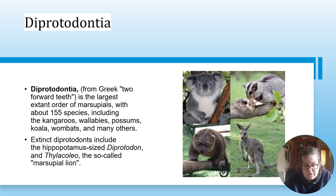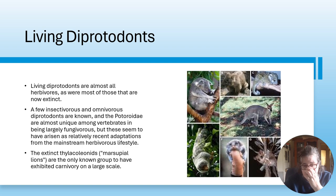Diprotodontia - from 'two forward teeth' - is the largest extant order of marsupials with about 155 species, including kangaroos, wallabies, possums, koala, wombats and others. Extinct members include the hippopotamus-sized Diprotodon and the Thylacoleo - the so-called marsupial lion - and probably also the Tasmanian tiger.